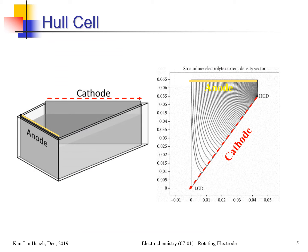The rotating Hull cell is quite popular for electroplating processes. In electroplating, you want to know the best conditions and what current density gives the best deposit. The Hull cell has an anode on one side and a trapezoidal cathode shape, so the anode-to-cathode distance varies — very close on one end and far away on the other — giving a very non-uniform current distribution from high to low current density across the cathode.